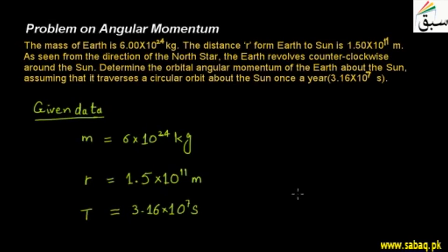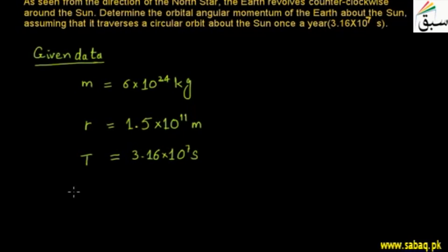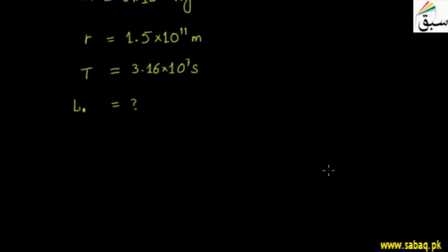We calculate the orbital angular momentum, which we represent as L₀. First of all, we try to calculate the velocity of the motion. If the Earth goes around the Sun, we calculate using the circular path.